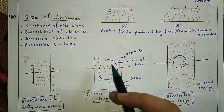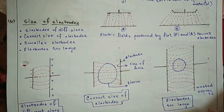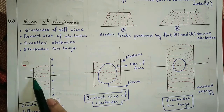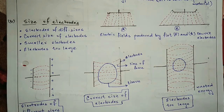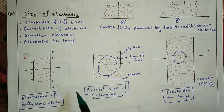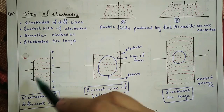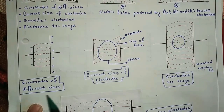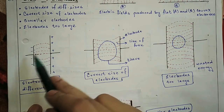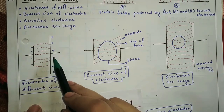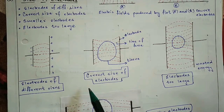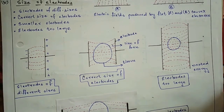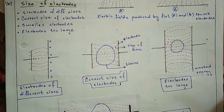Now let's talk about the size of electrode. The two electrodes should be the same size. If they are different sizes, a different magnitude of charge is required to charge them. As per the rule, the electrode should be slightly bigger than the body part to be treated.